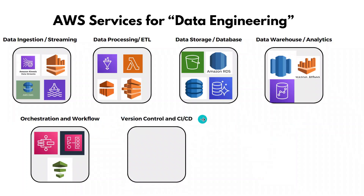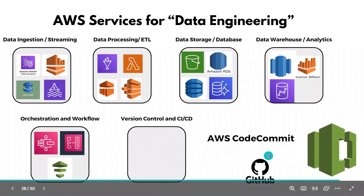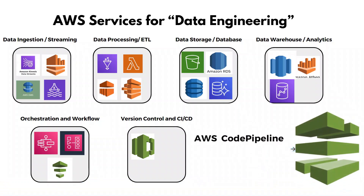The last category is version control and CI/CD. To build any application you need a version control and code management system, as well as continuous integration and deployment pipelines to push to test and production environments. AWS CodeCommit is an alternative to GitHub, offering similar functionalities as a managed service. For CI/CD, AWS CodePipeline is a managed service used to define your CI/CD pipelines.